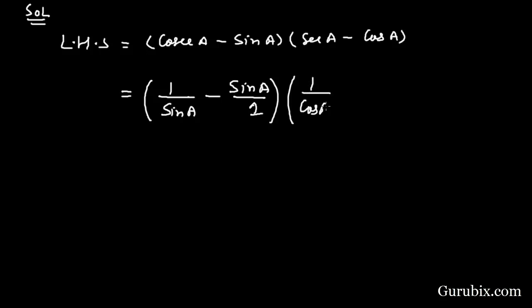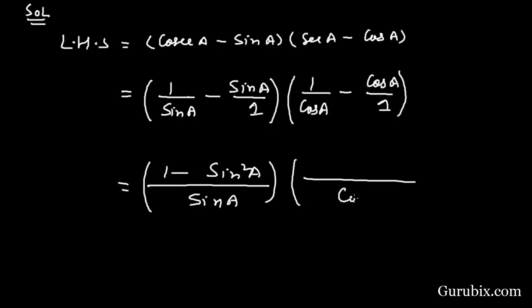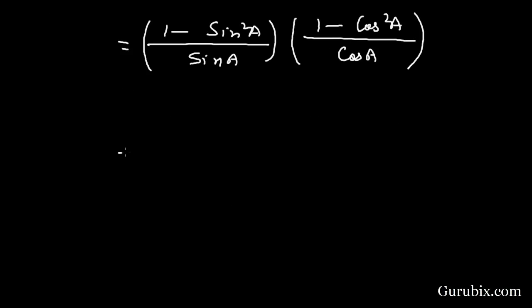Now we shall take LCM in both the brackets. Then we have sin A and here we have 1 minus sin squared A. And in this bracket we have cos A and here we have 1 minus cos squared A.